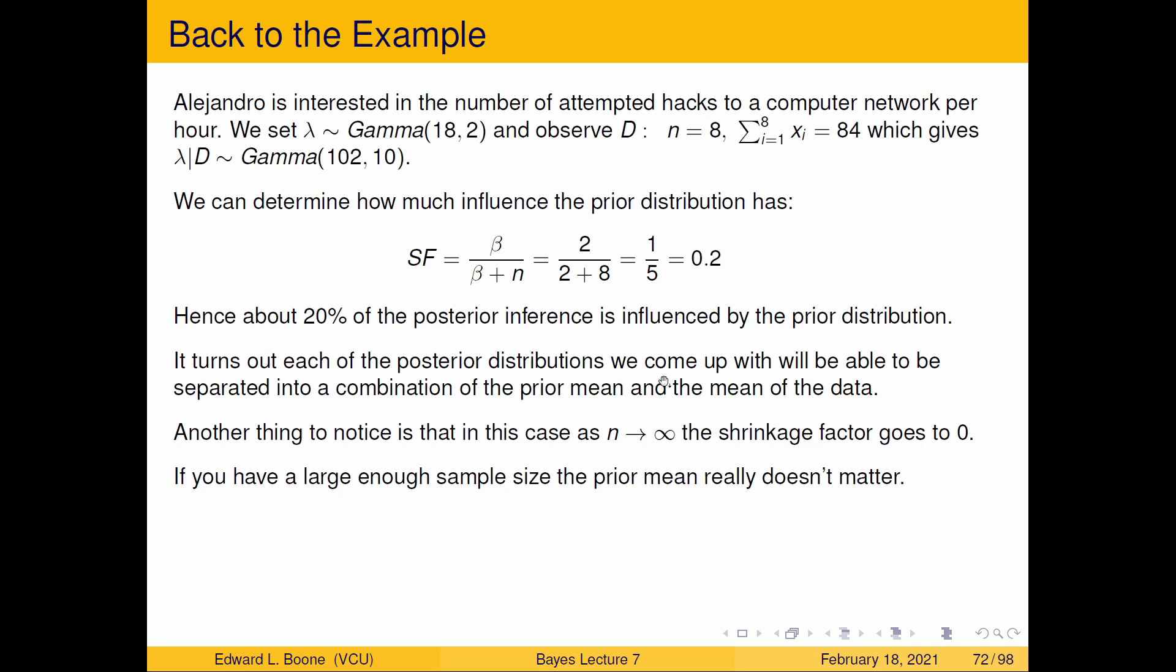Since we're able to do this, we can notice that as n goes to infinity, the shrinkage factor is going to go to zero. So the more data I get, the prior mean doesn't really influence anything. It might way out in some decimal places, but for all practicality, isn't going to influence things that much.